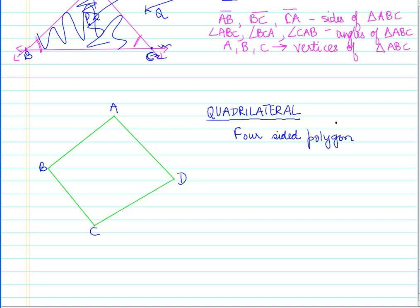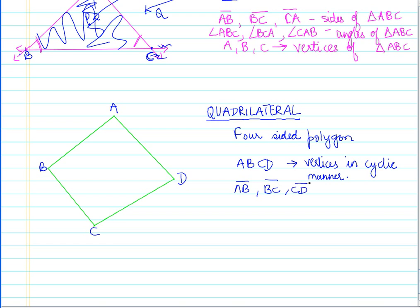Let us understand the terms associated with a quadrilateral ABCD. It is important to note that we name the vertices in a cyclic manner. The four sides are AB, BC, CD, and DA. There are four angles: angle ABC, angle BCD, angle CDA, and angle DAB.